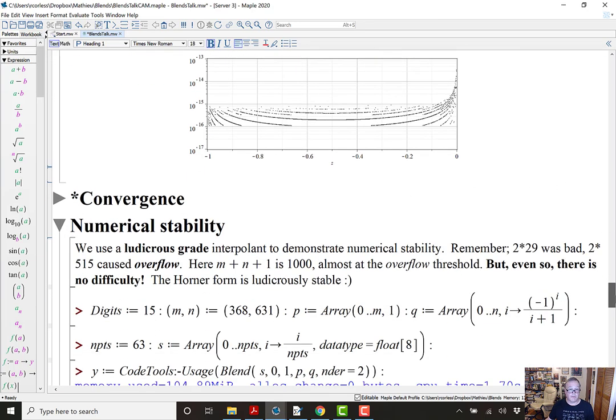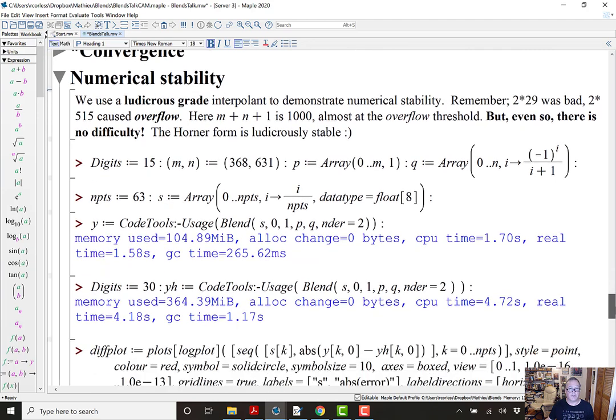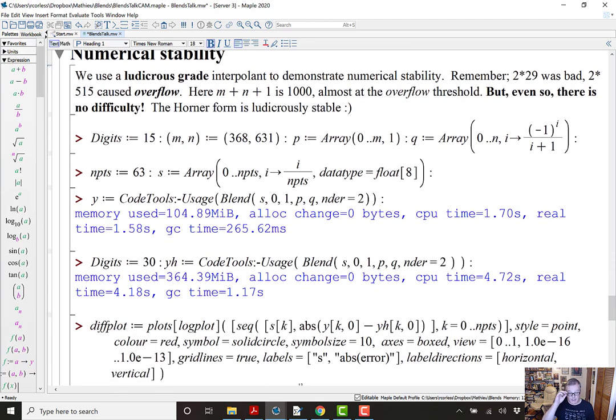To look at numerical stability, I use a ludicrous grade interpolant. So remember, k equals 29 was bad. k equals 515 caused overflow. Here I'm going to take m and n so large that m plus n plus 1 is 1000. So we're almost at the overflow threshold. But even so, there's no problem. It just works. In fact, the Horner form is ludicrously stable. So we take m to be 368. We're working in 15 digits. Just double precision. n is 631. So m plus n plus 1 is 1000.